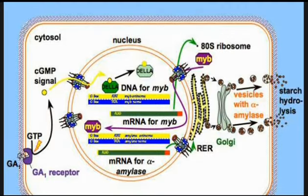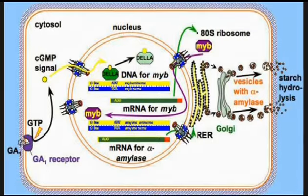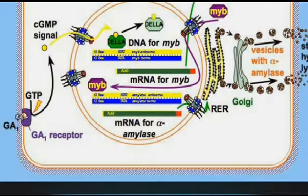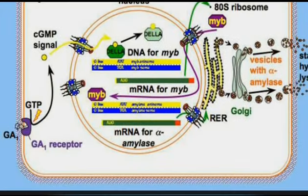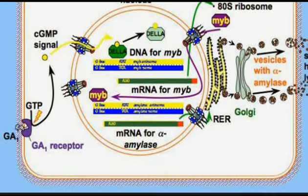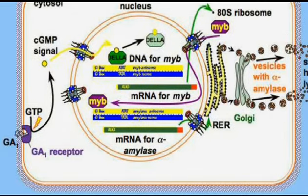It involves gibberellic acid 1, shown at the very left side of the bottom. Here is the receptor of gibberellic acid 1 — the GA1 receptor — where GTP is utilized. It is called a secondary messenger molecule, which is called the cGMP signal pathway.